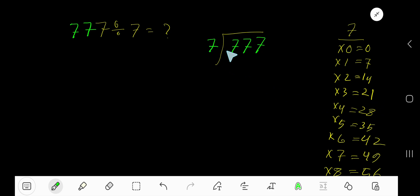7 goes into 7 one time. 1 times 7 is 7, subtract to get 0. Bring down the next 7—07 means 7. 7 goes into 7 how many times?